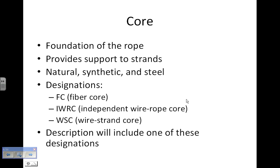The core serves as the foundation that gives support to the strands — something for them to be wound on. It can be made of natural material, synthetic, or steel. Fiber core, independent wire rope core, and wire strand core are all different types, and the description of the wire rope will tell you what kind of core it has.